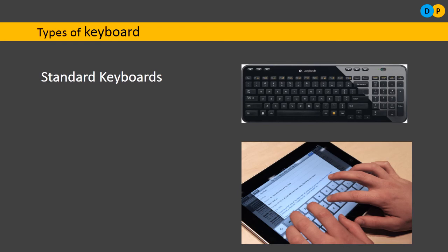Another type is the multimedia keyboard. In addition to the standard 105 to 108 keys, multimedia keyboards have extra buttons that allow you to control multimedia functions — such as controlling sound, movies, pictures, and images. You can pause video, hold back, launch the internet with a dedicated button, and control audio volume, mute, and other media functions. These extra controls are what distinguish multimedia keyboards.